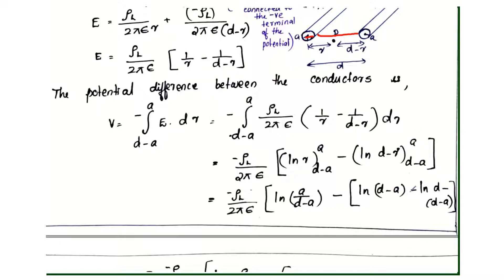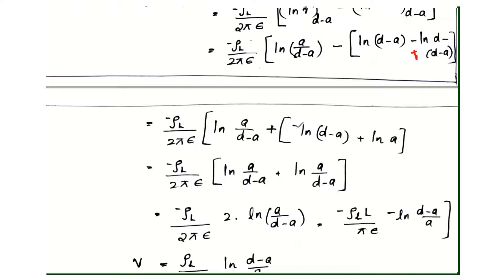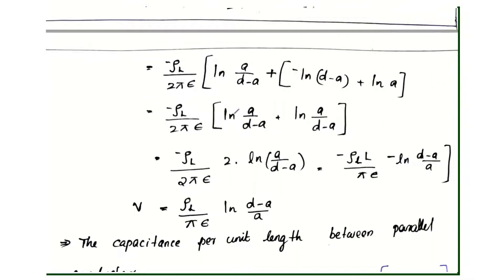First case: ln(D minus A). Second case: d minus (d minus A). The d's cancel, giving minus of minus A, plus A. So we have rho_l divided by 2 pi epsilon times ln(A by D minus A) plus ln(A by D minus A), which gives 2 times ln(D minus A by A).